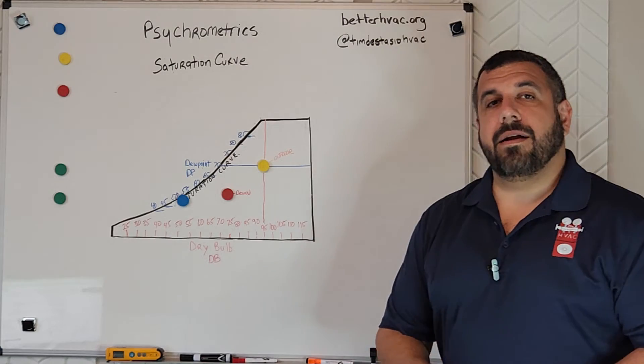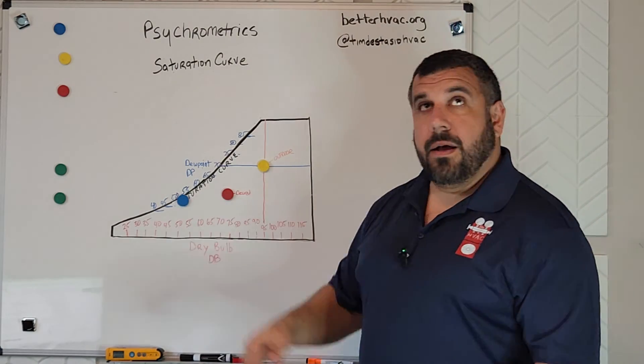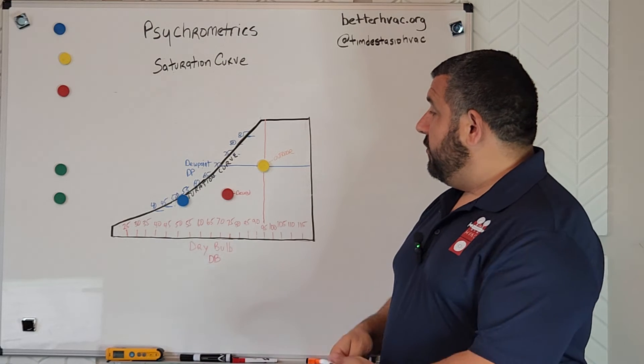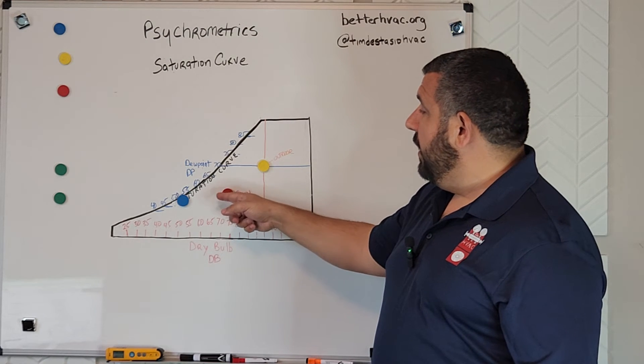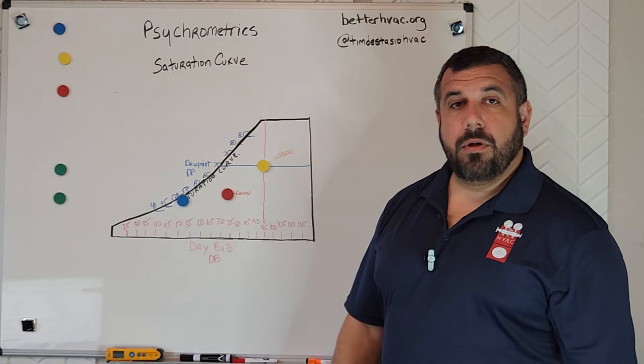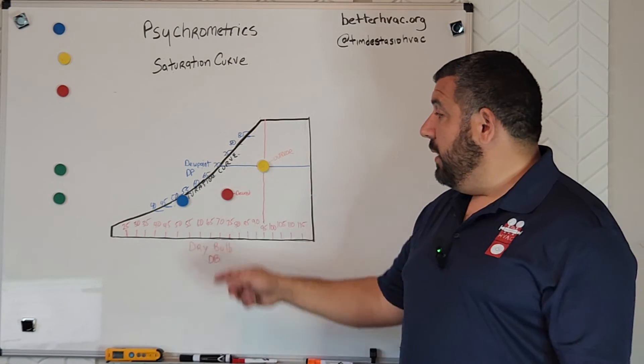And so this is really the supply air temperature. And that comes out of our supply registers. It mixes in with the room and it sort of keeps this dot where it is, because if it wasn't there, then our outdoor conditions would just pull our dot back up towards being hot and humid.